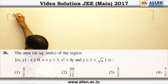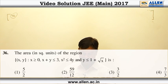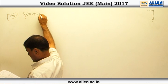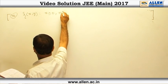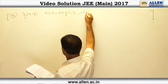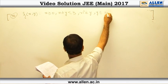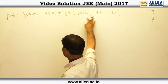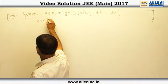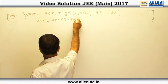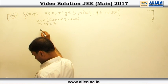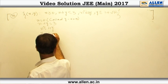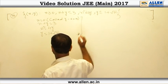Question number 36. We have to find the area in square units of the region defined by: x is non-negative, x plus y is less than or equal to 3, x squared is less than or equal to 4y, and y is less than or equal to 1 plus root x. Before finding the area, we draw the line x equal 0 (the y-axis), the line x plus y equal 3, the parabola x squared equal 4y, and the curve y equal 1 plus root x simultaneously.